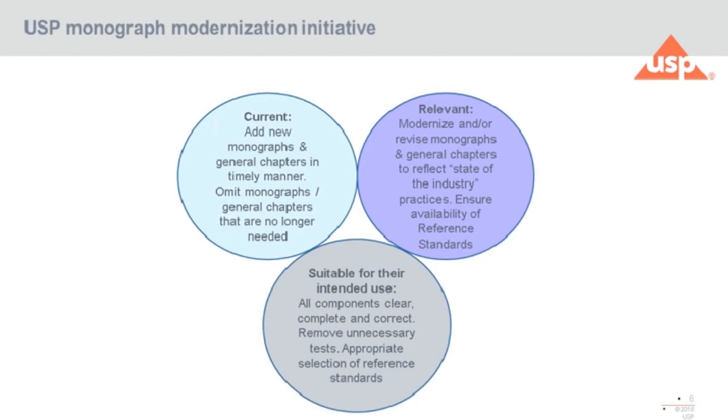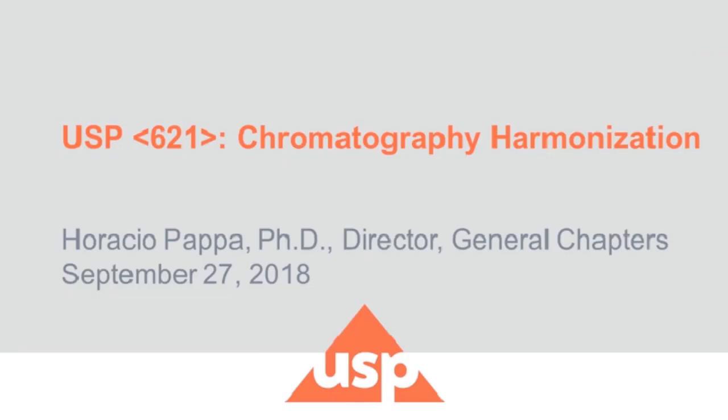The third element of monograph modernization is that it has to be suitable for the intended use, so all components in the monograph must be clear, complete, and correct. We remove unnecessary tests that are no longer applicable and select appropriate reference standards needed for the monograph. These three elements — current, relevant, and suitable — are needed to apply the monograph modernization scheme. That gives you an overview of monograph modernization. I will now introduce the next speaker, Dr. Horacio Pappa, who will discuss chromatography harmonization.